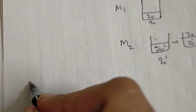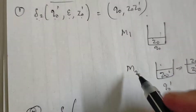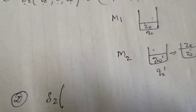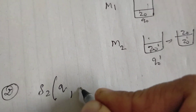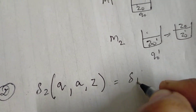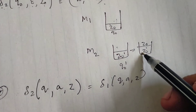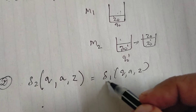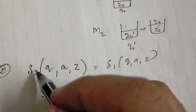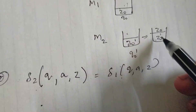The second step involves delta2, the M2 transition function. On any state q, on any input symbol a, on any stack symbol z, M2 copies the transitions of M1. Whatever transition is done in M1, we copy that transition to M2.